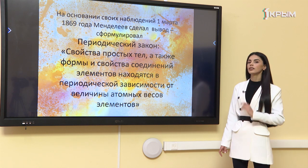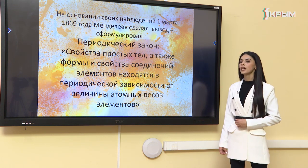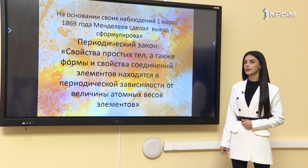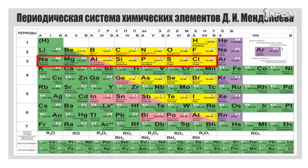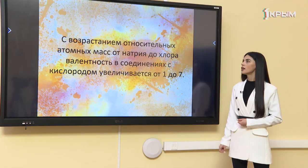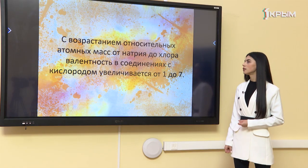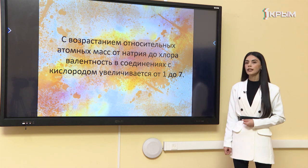На основании своих наблюдений 1 марта 1869 года Менделеев сформулировал периодический закон: свойства простых тел, а также формы и свойства соединений элементов находятся в периодической зависимости от величины атомных весов. Чтобы познать сущность периодического закона, давайте рассмотрим свойства химических элементов в ряду от натрия до хлора. С возрастанием относительных атомных масс наблюдается постепенное ослабление металлических и усиление неметаллических свойств. Валентность в соединениях с кислородом увеличивается от 1 до 7.